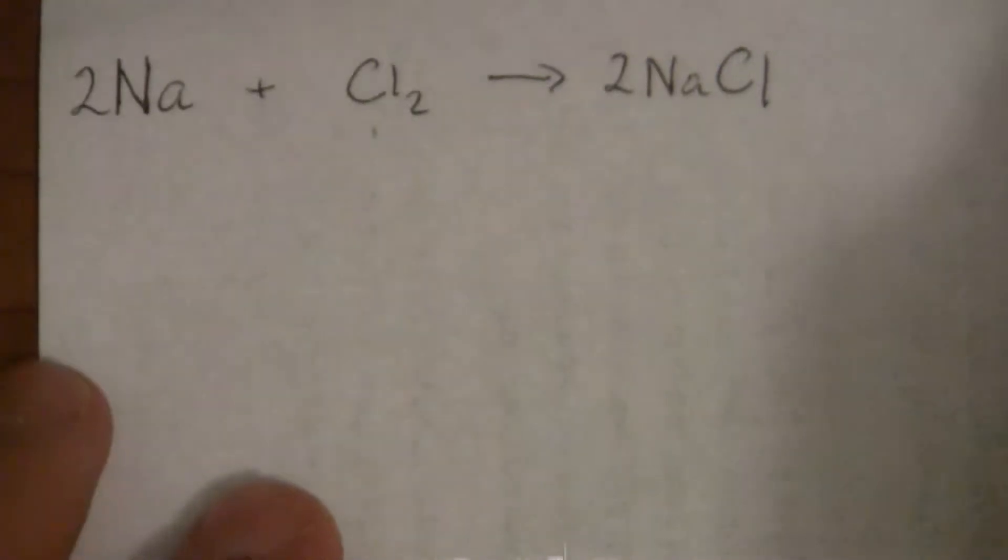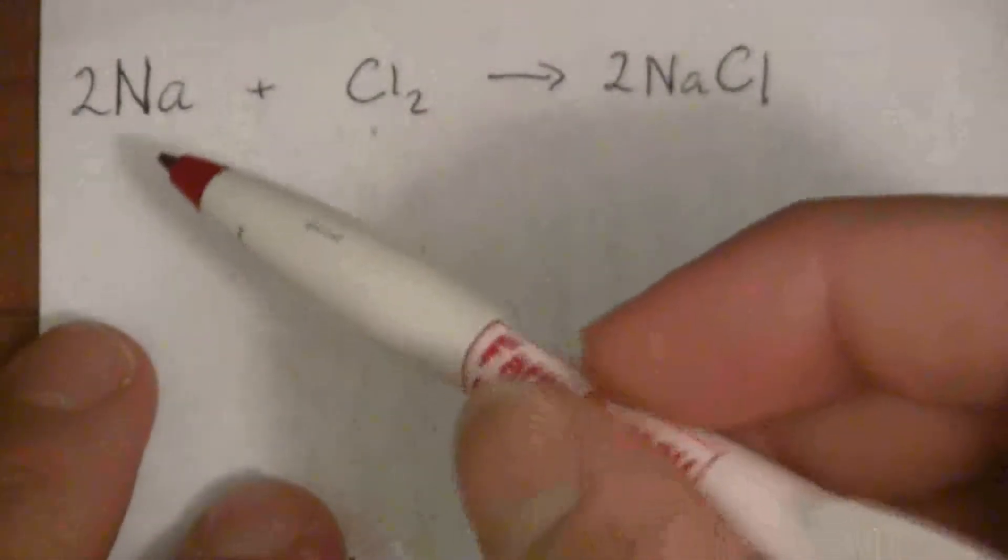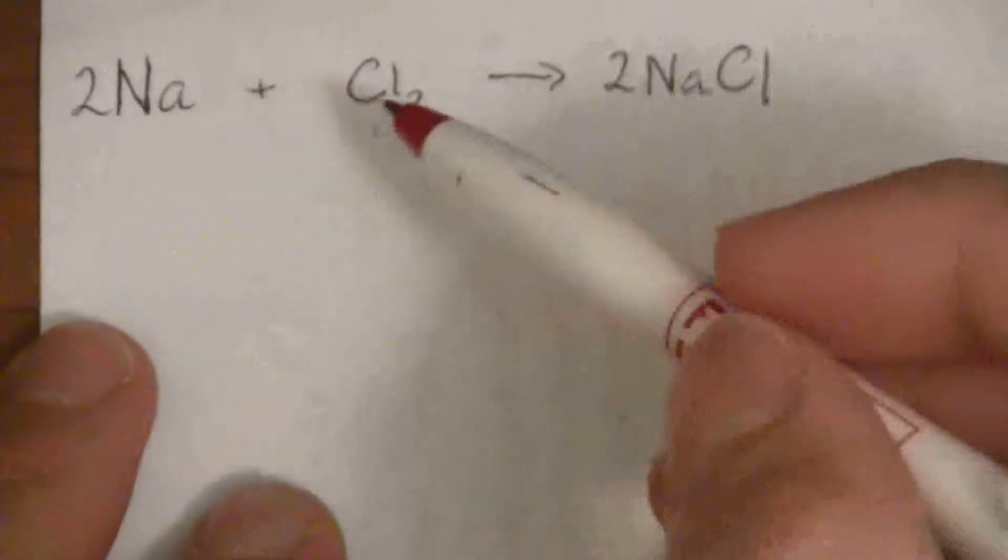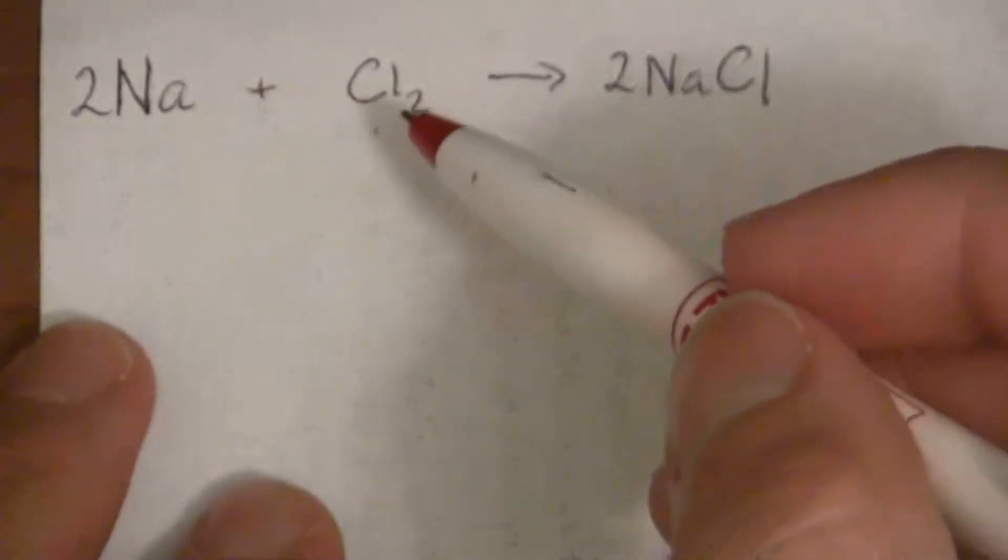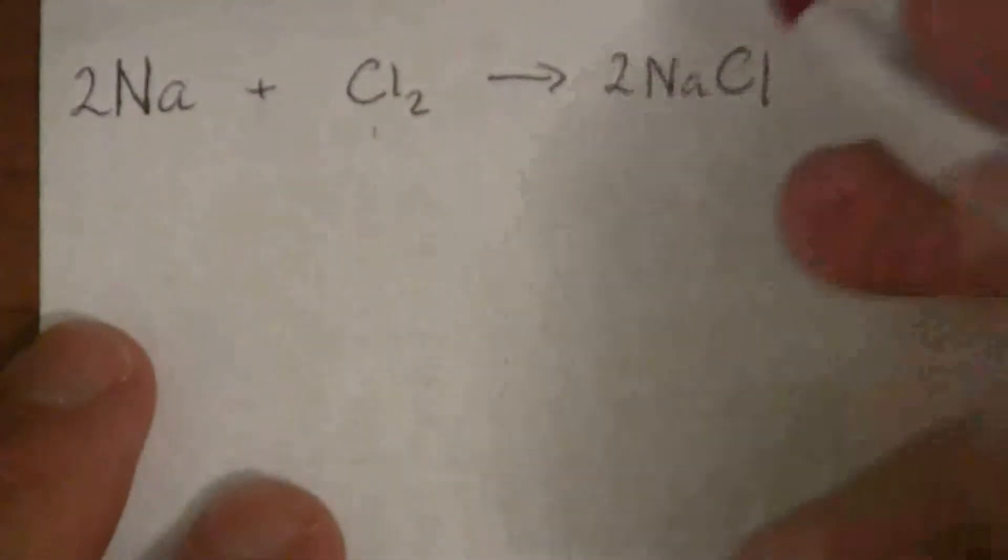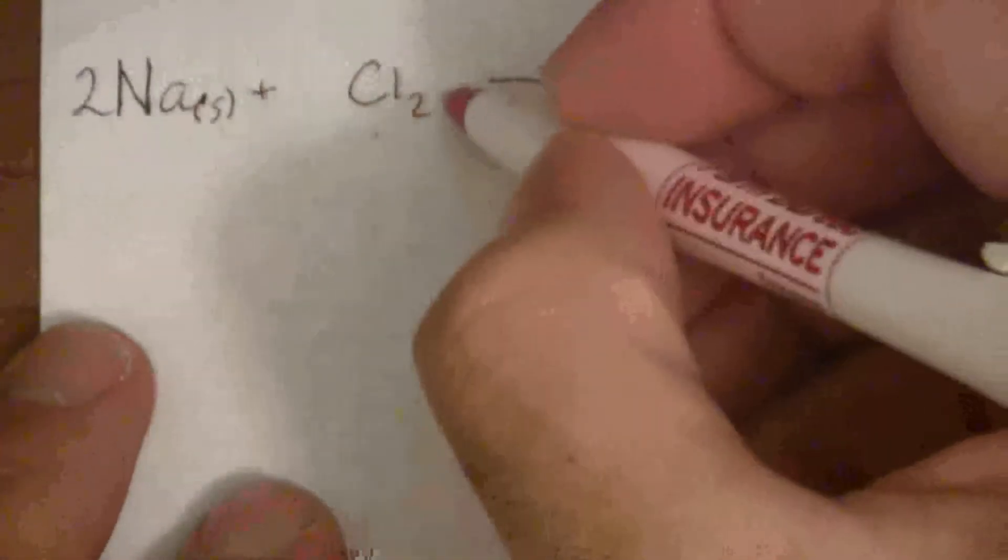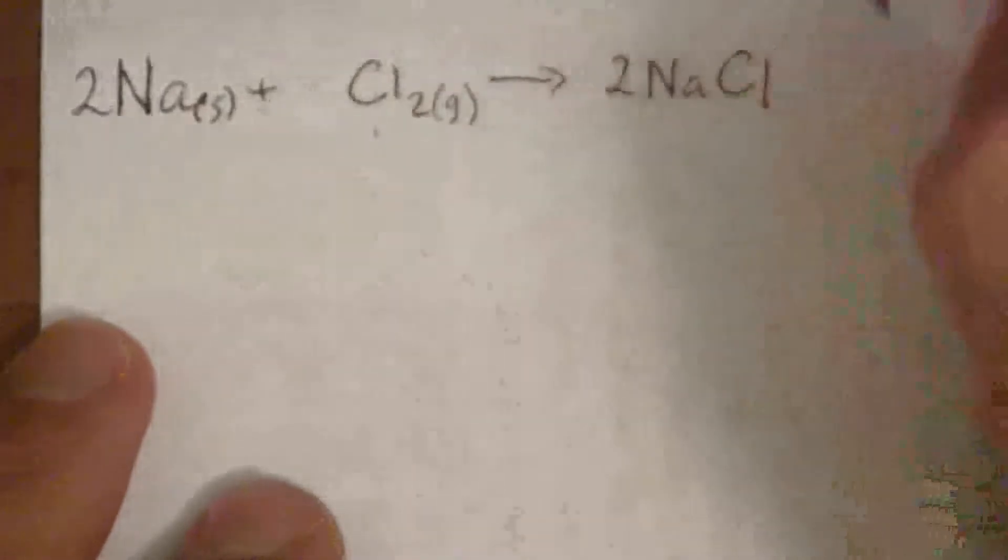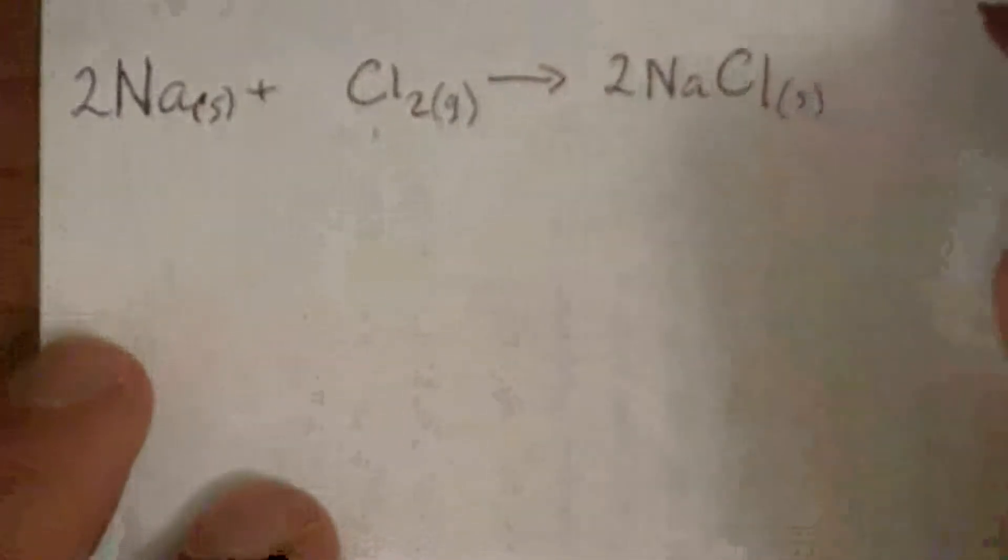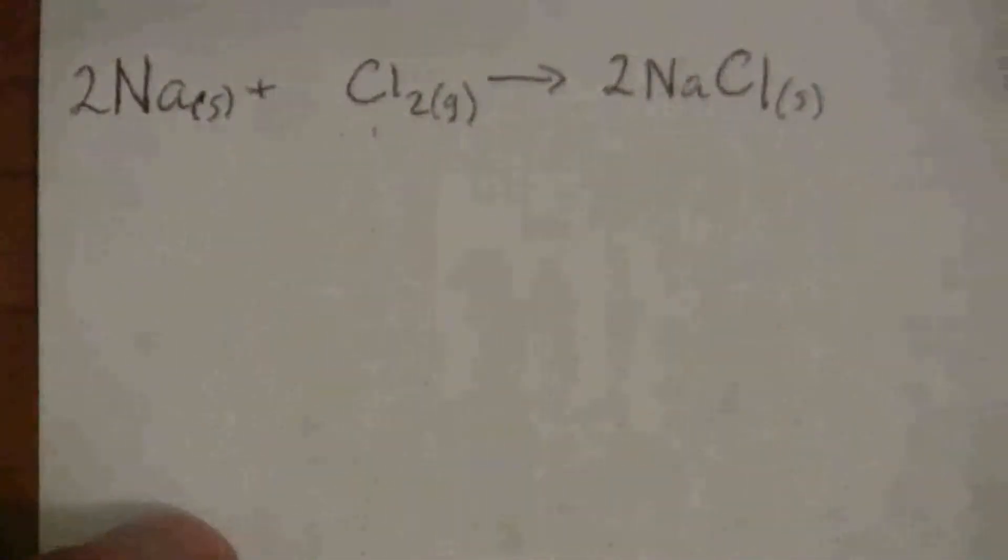Let's consider the case of the reaction of sodium metal with chlorine gas to form sodium chloride. The sodium metal is a solid, the chlorine is a gas, and it will form solid sodium chloride.